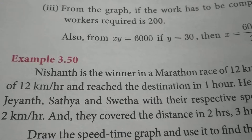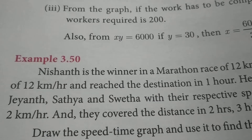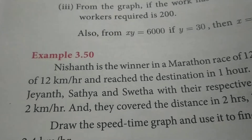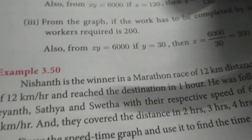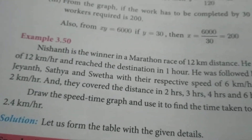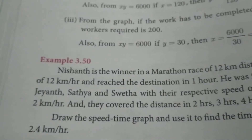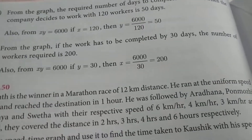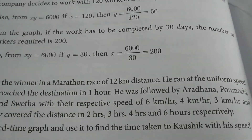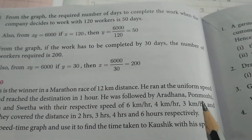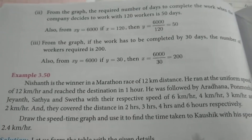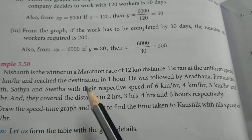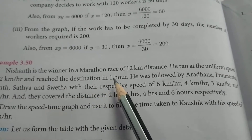Hi students, welcome to JR10thmax. I am going to give a graph example 3.50. Nishant is the winner in a marathon race of 12 km distance. He ran at the uniform speed of 12 km per hour and reached the destination in 1 hour.